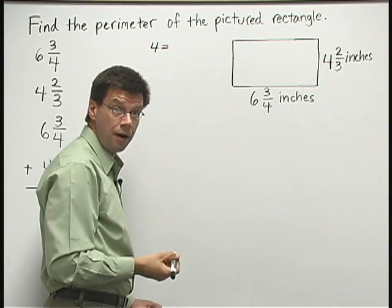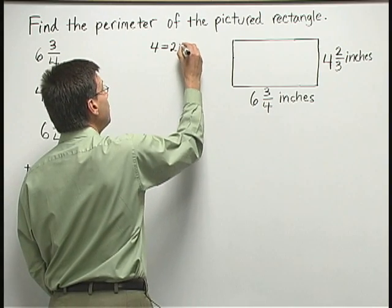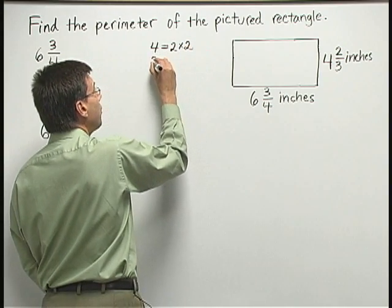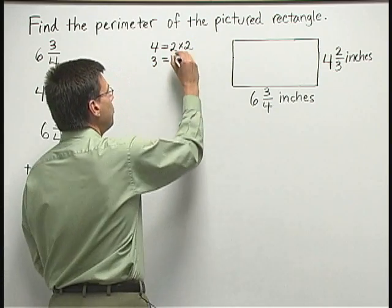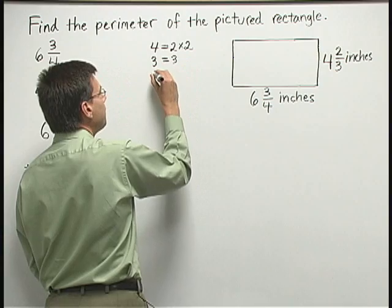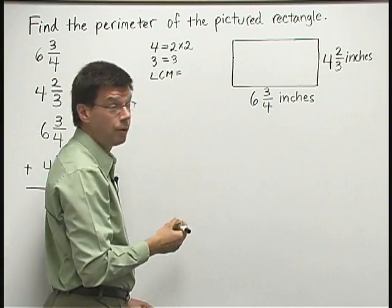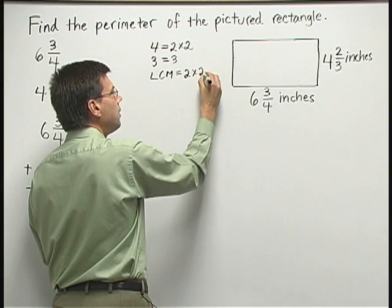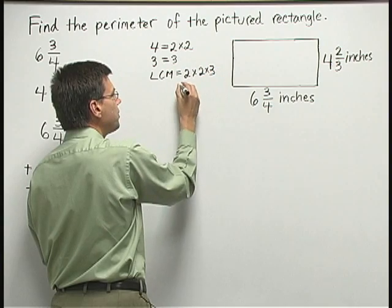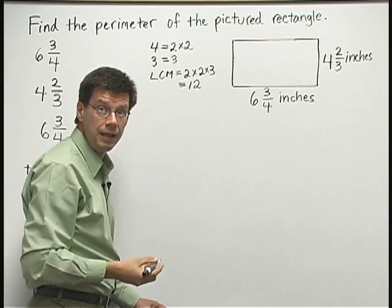We get started by breaking down four into prime numbers. Four is two times two. Three, the other denominator that's involved, is already prime, so we just leave it alone. And then to get our LCM of those two, I need two twos and I need one three. So two times two times three, which is twelve, is our LCM.